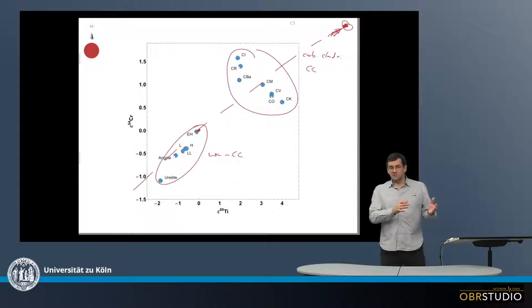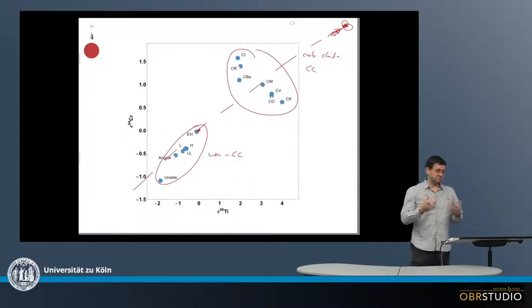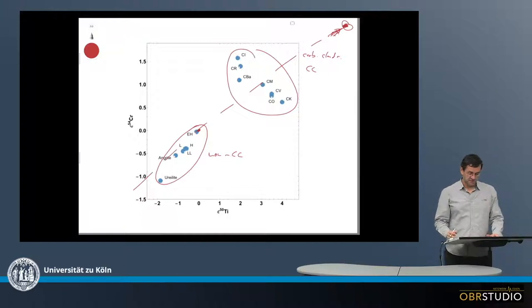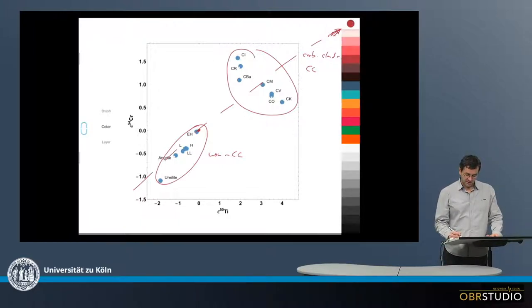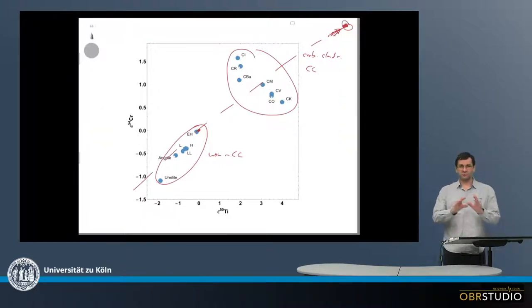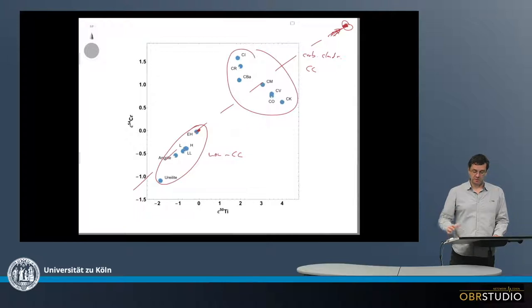So then we can use this plot here to develop some possible models of the early solar system. I just want to outline one of these. The main aspect of this plot is that nucleosynthetic anomalies allow to classify the meteorites into different groups of different isotope compositions, depending on the nucleosynthetic anomalies.